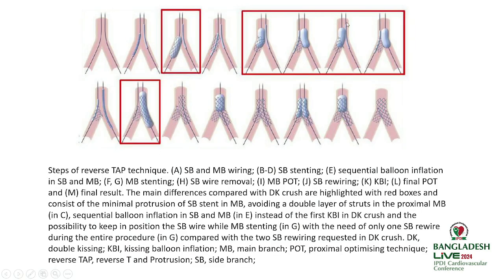These are the steps of the reverse TAP technique. Anatomically, if you have a very narrow-angle side branch, then you can do a pre-planned reverse TAP technique. You put a wire in the main vessel, a wire in the side branch, put a stent in the side branch and deploy it keeping the edge inside the main vessel. Keeping the stent there, put a balloon in the main vessel and sequentially dilate the ostium of the side branch stent and the main vessel. Then bring a stent to the main vessel, deploy it — there is a gap area that has to be covered by a POT. After POT, rewire the side branch, do a kissing, re-POT — and this is the final result.